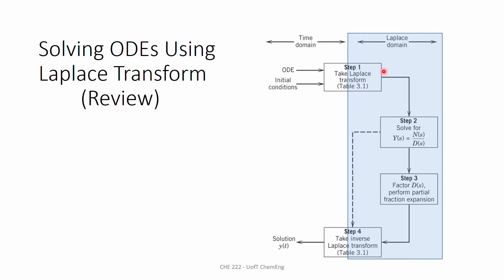Then effectively, by taking the Laplace transform of the equation, we convert the ODE into an algebraic equation, which can be simply solved to give us capital Y(S) — the solution of our ODE in Laplace domain — in terms of a rational function, which is capital N(S) divided by capital D(S). If the problem is easy, we can right away find a match for this rational function in our Laplace transform table and take the inverse Laplace transform to obtain the solution in the time domain.